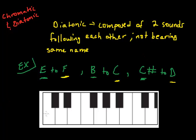Again, so if you recall, this one would be C, this one would be F. So, between E to F, it's just one semitone. They are adjacent keys, but they don't bear the same name. Between B and C, again, this one would be C. And also, between C sharp and D is another semitone, but they don't bear the same name. So, that's what diatonic is.